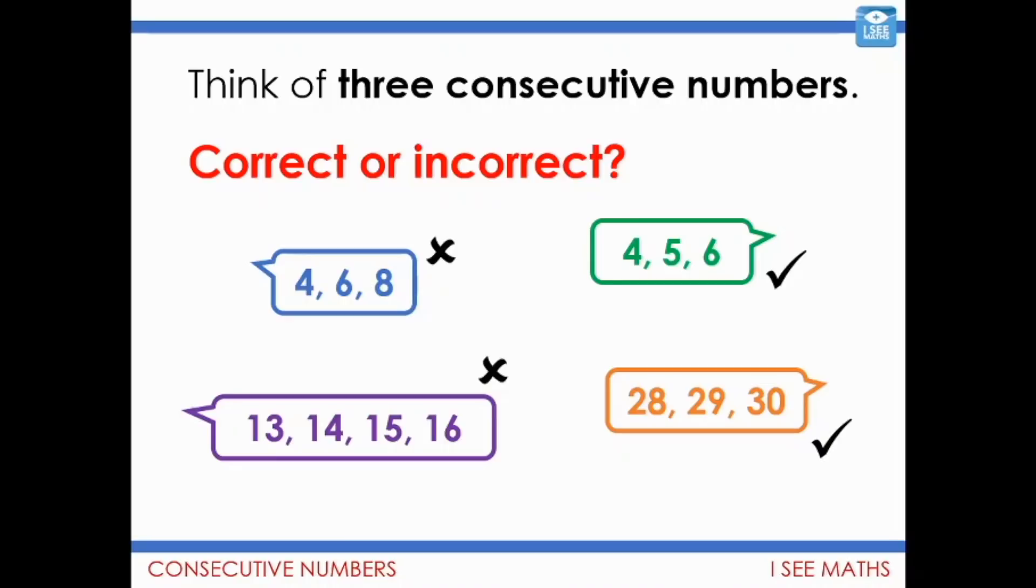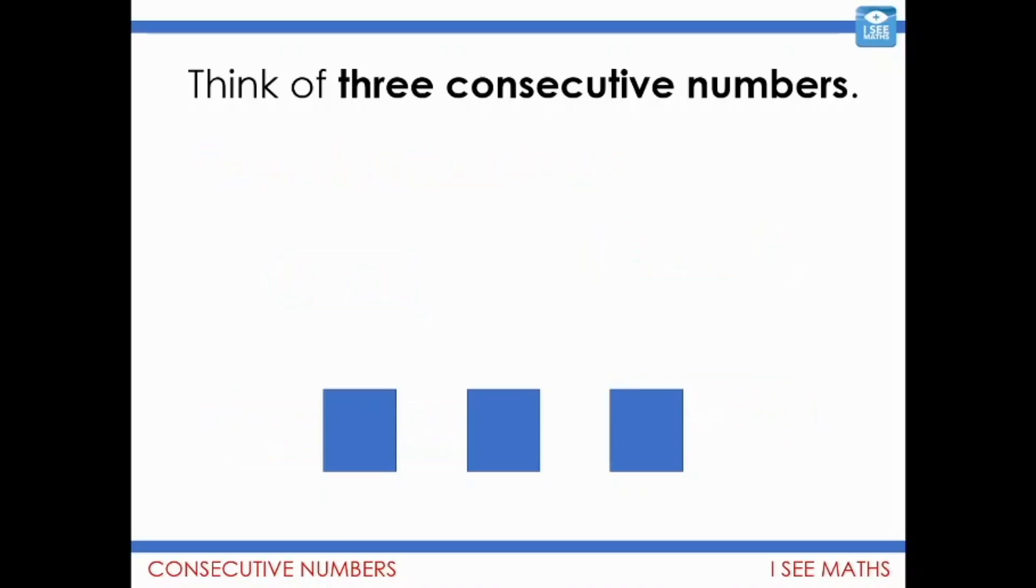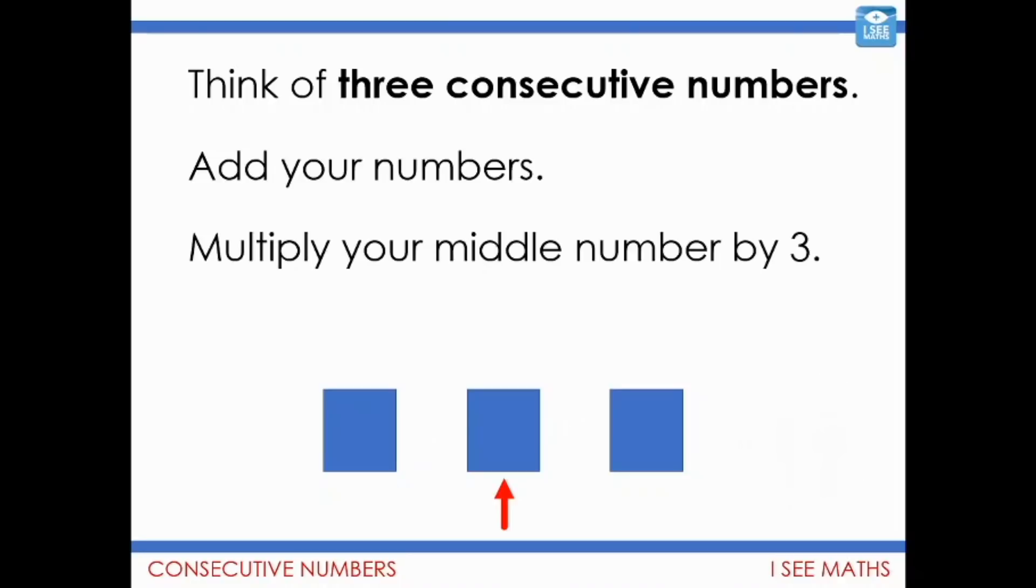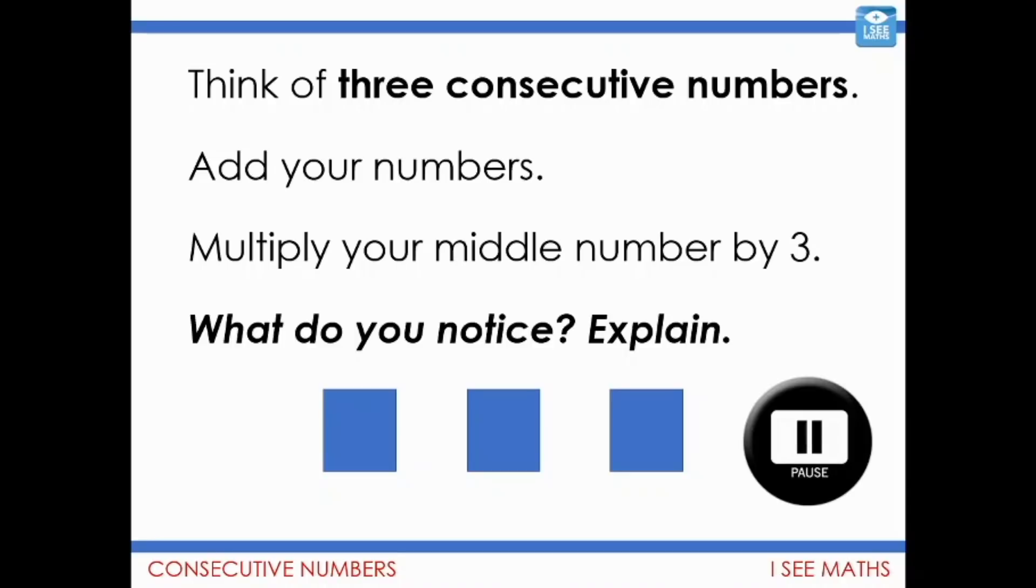Think of 3 consecutive numbers. You can choose your own, you can make them as large or as small as you like. Choose 3 consecutive numbers. Now, add your numbers. Pause the video and add those 3 consecutive numbers that you've chosen. Are we ready to go again? Well, multiply your middle number by 3. What do you notice? Why does that happen? Can you explain that? Can you try with a different set of numbers? Do you find the same thing? Let's see if we can explore this. Pause the video. What do you notice? How else can you explore this idea?